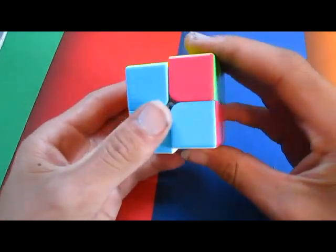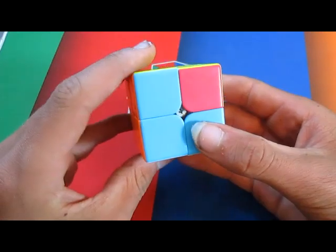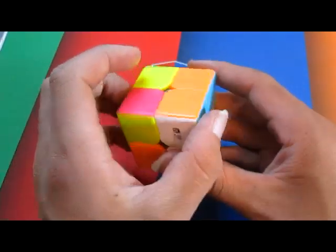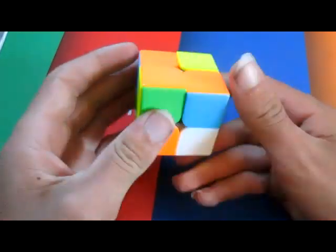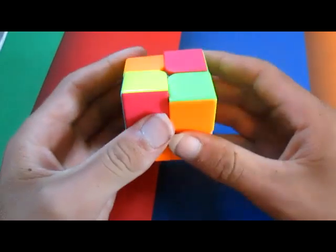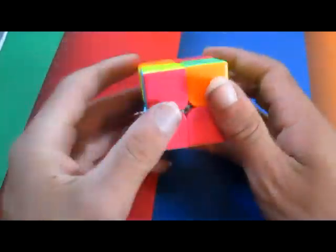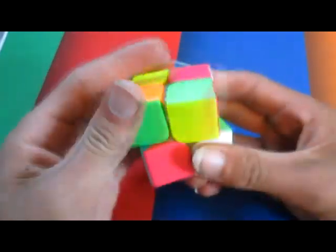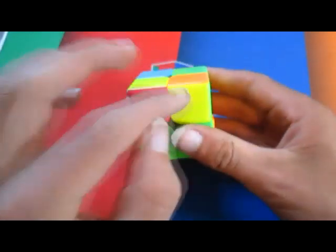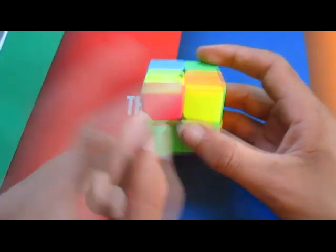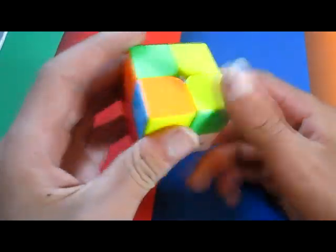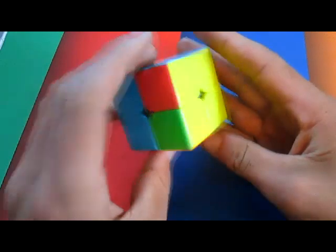But it won't always solve the top side, so I'm going to show you some ways to do that. If you get this shape, you do it from here, and do right, up, right down, up, right, up twice, right down. Now you have one piece right here, so do it again. And now you have this piece right here. Once you see a yellow piece right next to this one, that means you only have to do it one more time. And now we have the yellow side solved.